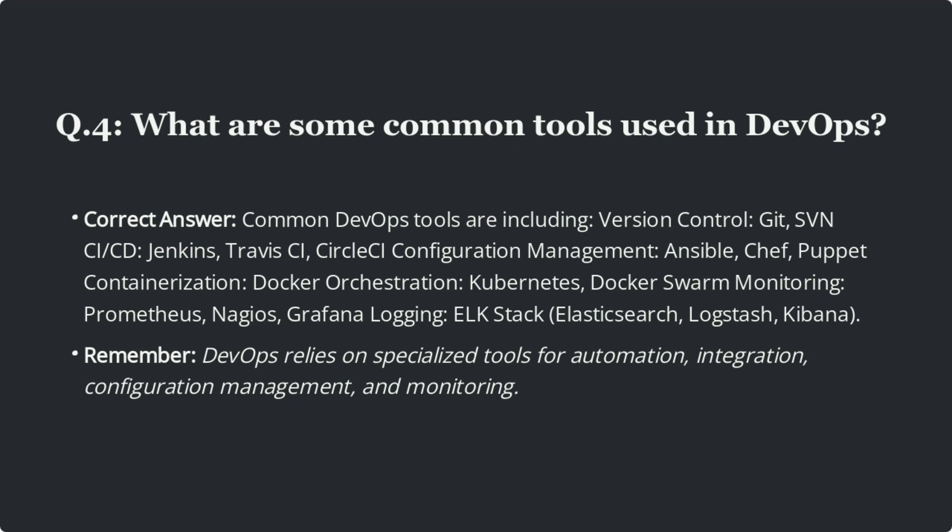Question 4: What are some common tools used in DevOps? Common DevOps tools include version control: Git, SVN; CI/CD: Jenkins, Travis CI, CircleCI; configuration management: Ansible, Chef, Puppet; containerization: Docker; orchestration: Kubernetes, Docker Swarm; monitoring: Prometheus, Nagios, Grafana; logging: ELK stack (Elasticsearch, Logstash, Kibana). Remember, DevOps relies on specialized tools for automation, integration, configuration management, and monitoring.